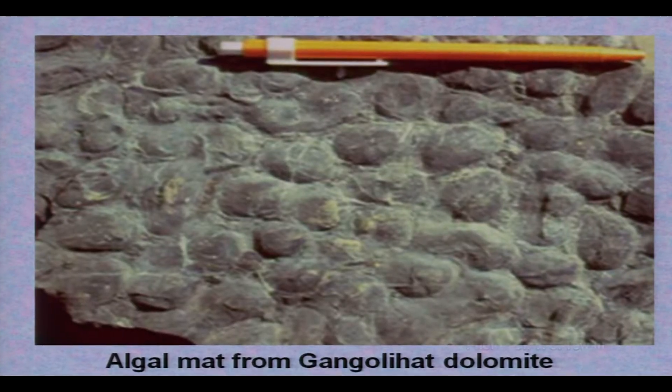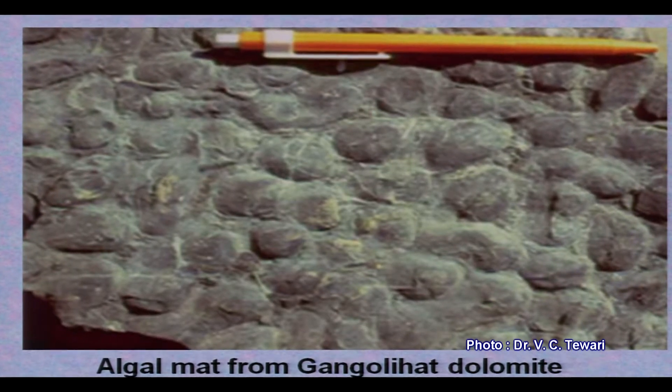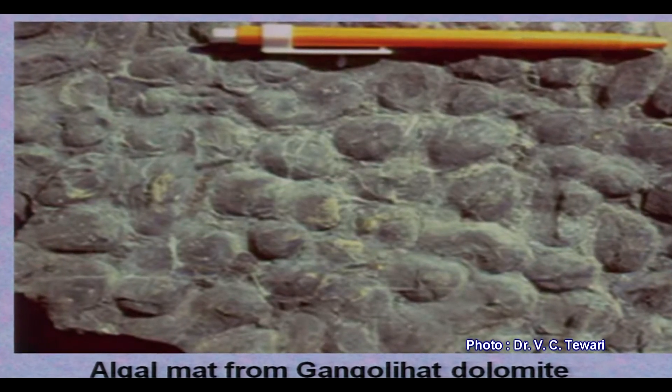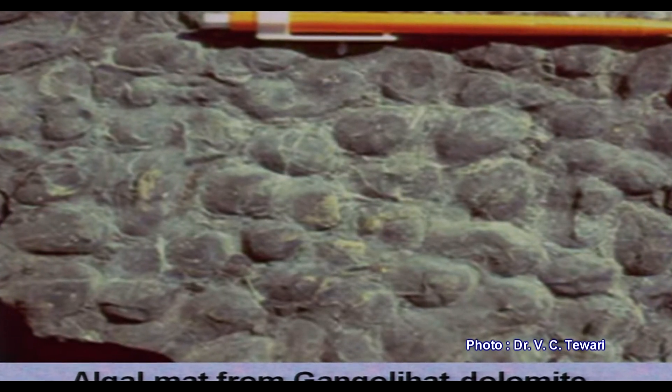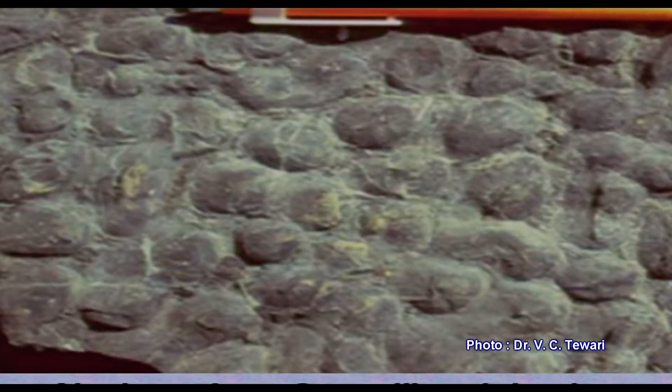Hello learners. In this program we will discuss about micro and mega fossils found in the Himalaya. Here we have algal mat — as you know, algae is a green color plant, very low in ranking. When they combine together and are converted into fossil, such a mat-like structure is formed.